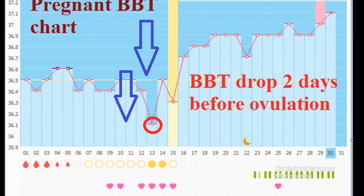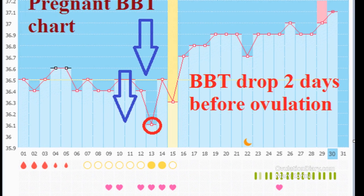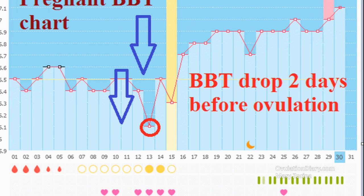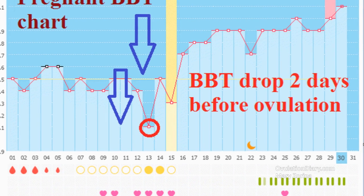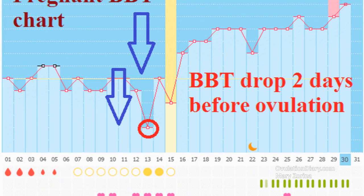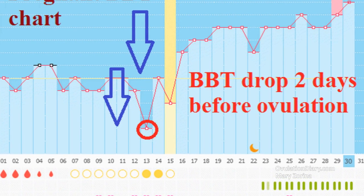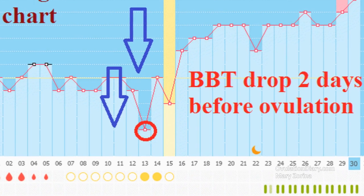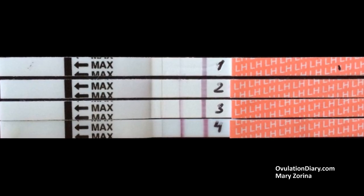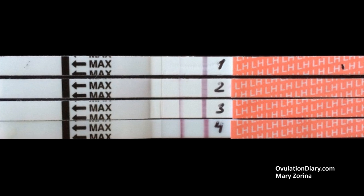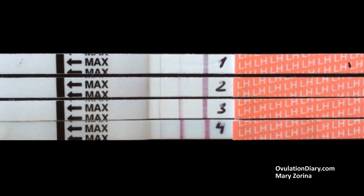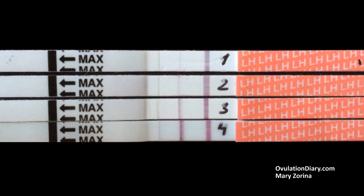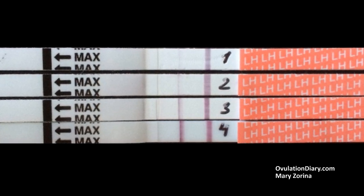Pay attention: on this day, ovulation tests will show a bright second strip. But first, while you are mastering the method, if you doubt whether this is a retraction before ovulation, do an LH test or pay attention to the nature of cervical mucus. There should be a consistency like egg white crude protein.